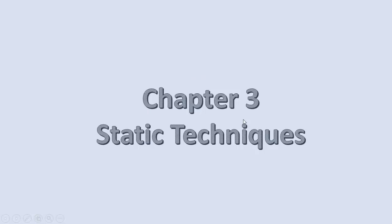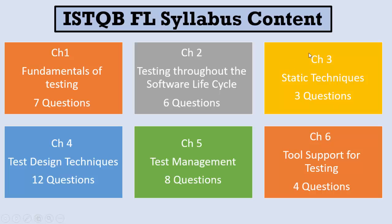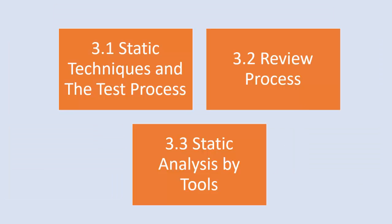We will now begin Chapter 3, which talks about static techniques. Chapter 3 consists of three questions in the exam. It's a small chapter and all its questions come in a direct way. All its questions are at the K1 remember level — they are direct and easy. Chapter 3 consists of three sections.